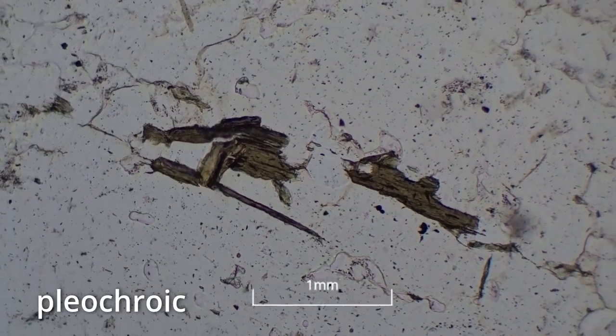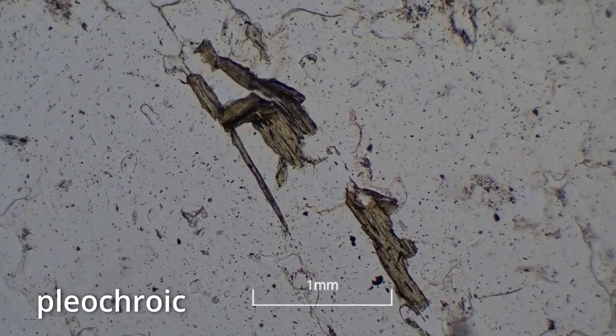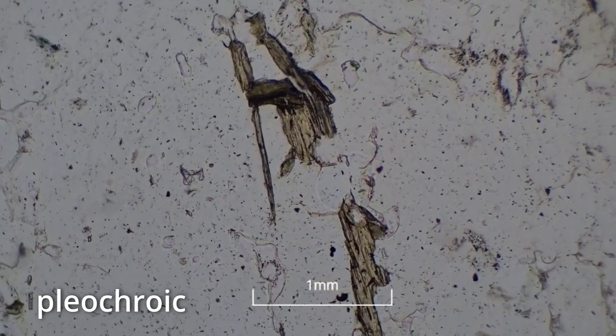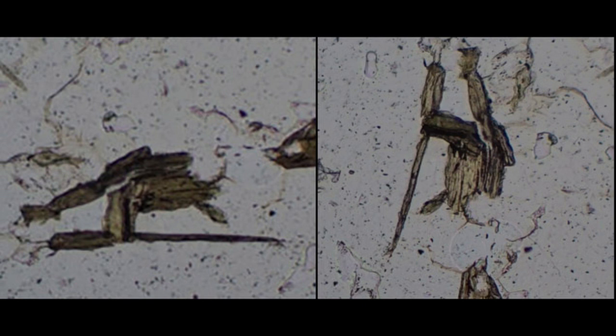This mineral is pleochroic. This means that as the stage is rotated, the mineral changes colour. The biotite mica is a darker brown colour when the cleavage of the mineral is east-west, but it is a paler brown colour when its cleavage is north-south.